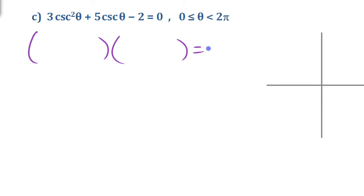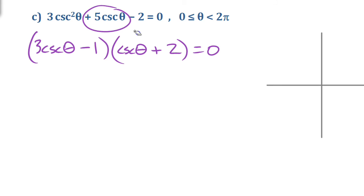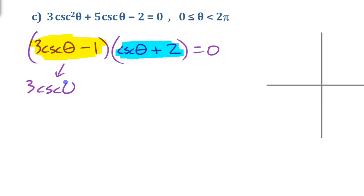Since the leading coefficient is 3, not 1, the only possibility for the degree 2 term is 3 cosecant and cosecant. Looking at the last term, negative 2 — the factors 2 and 1 are the only possibilities. After checking, the factors are (3 cosecant minus 1)(cosecant plus 2). Double-checking: negative 1 cosecant plus 6 cosecant gives us 5 cosecant, which is the correct middle term. Setting each factor to 0: 3 cosecant minus 1 equals 0 or cosecant plus 2 equals 0.